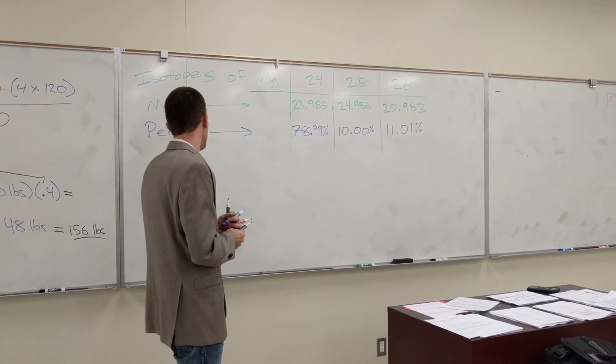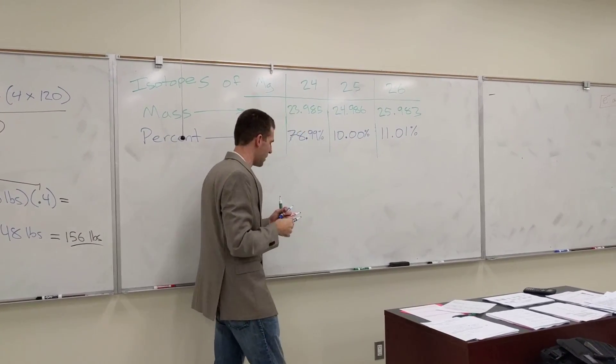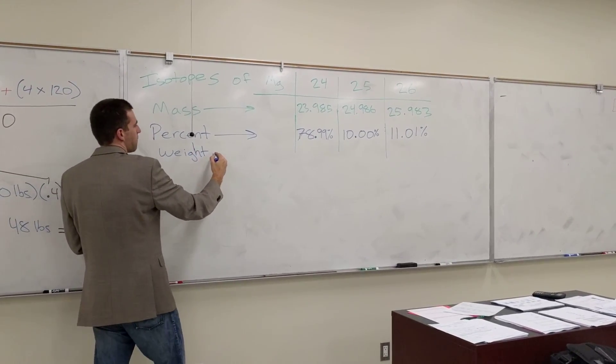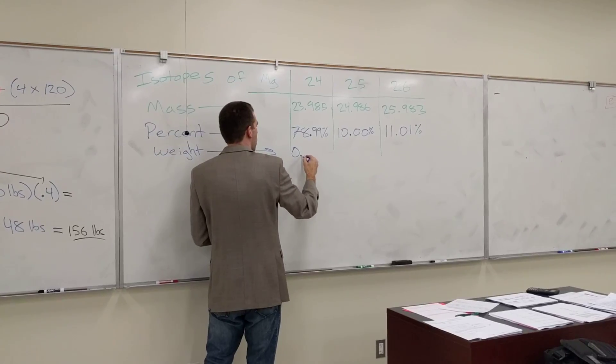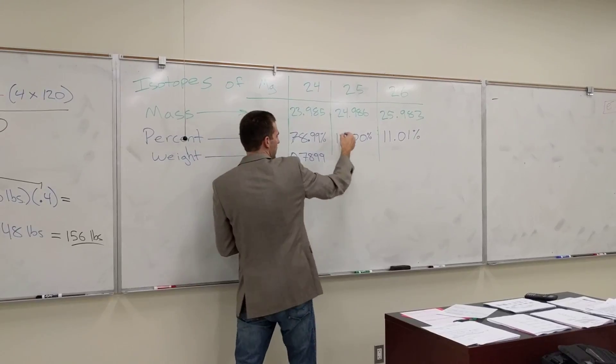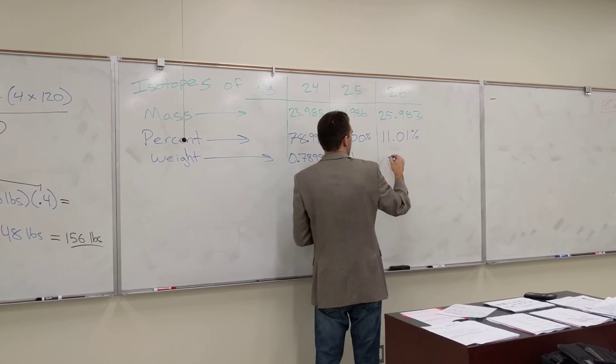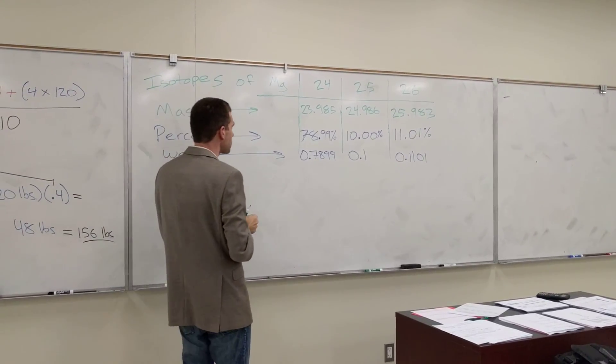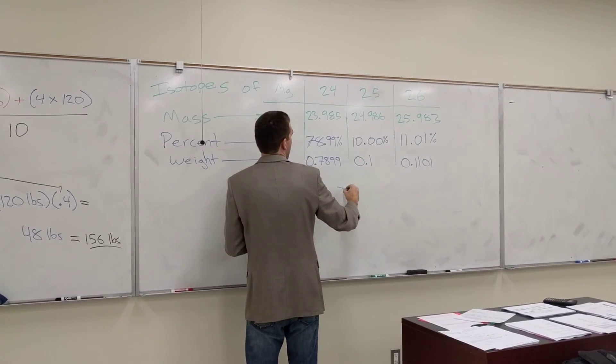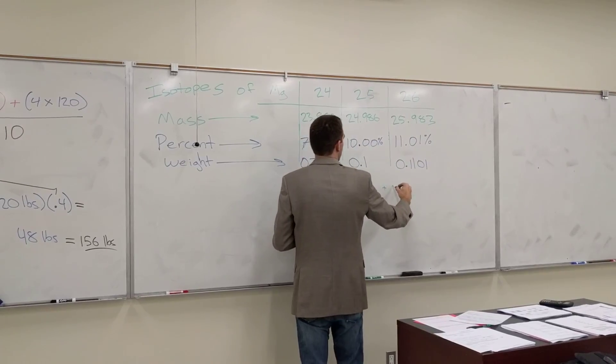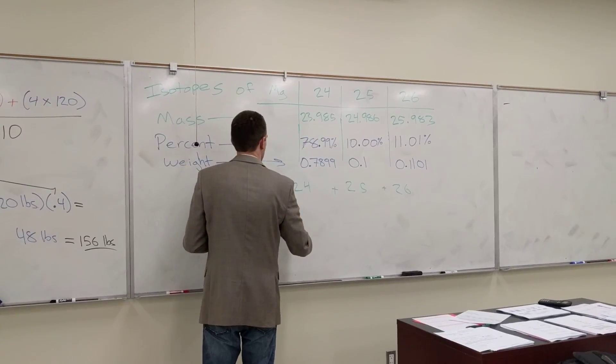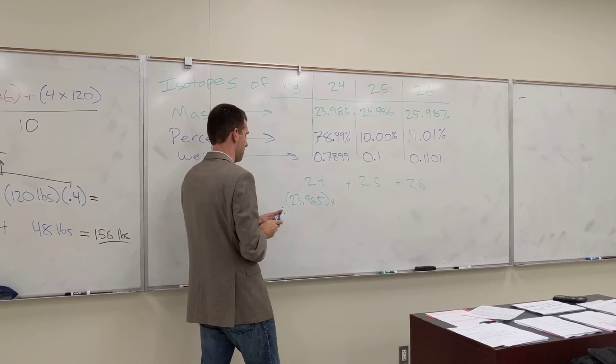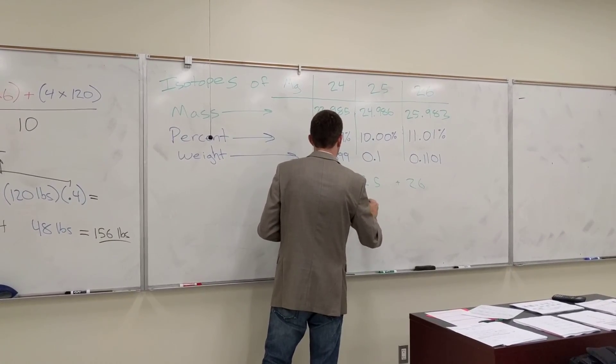What do we do? We need to do each of these weighted. So instead of percent, if I want weight in the non-percent form, what would this one be? 0.7899. Just move the decimal place. What would this one be? 0.1. And what would this one be? 0.1101. Now, how do I set these up? Well, the 24 isotope contributes, and the 25 isotope and the 26 isotope. So what do I do for each one? The 24 one is 23.985 times 0.7899.